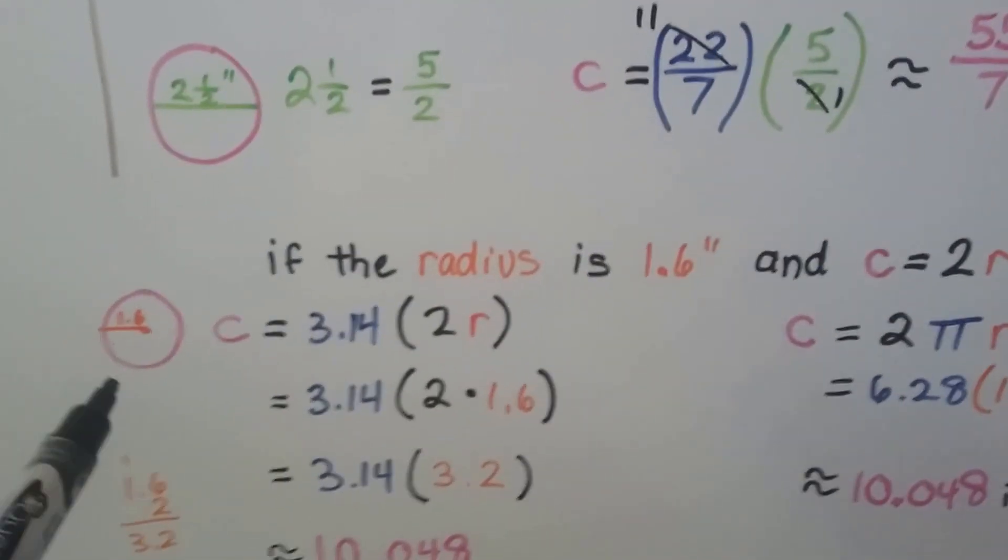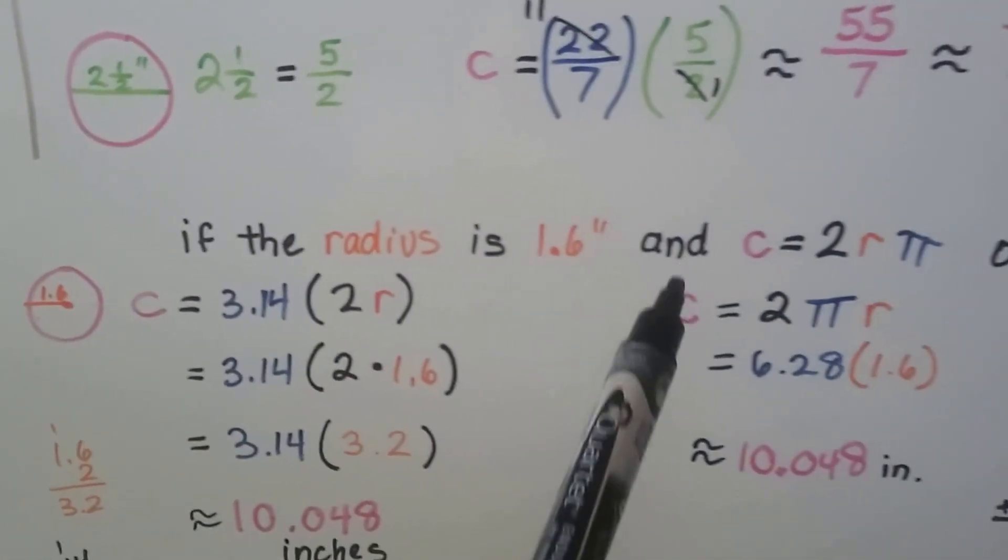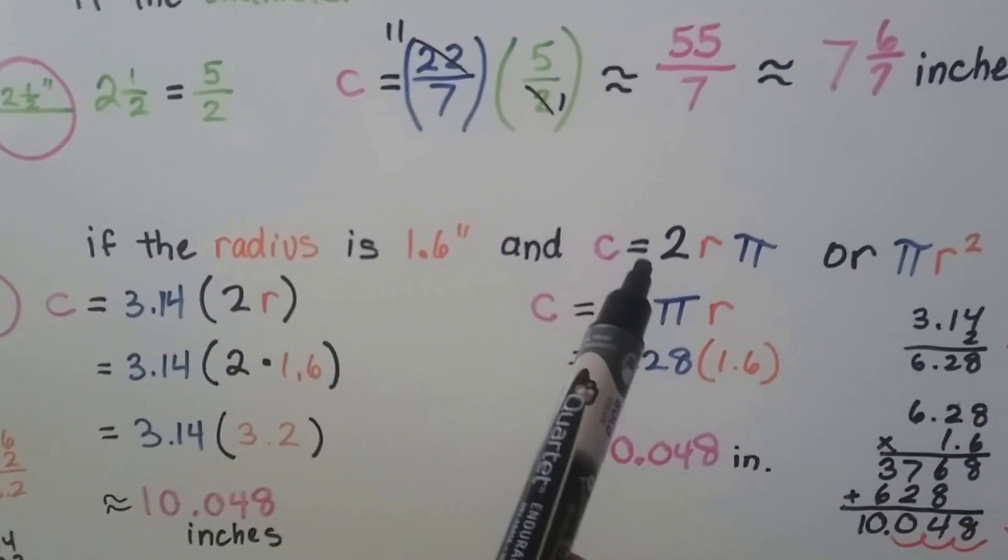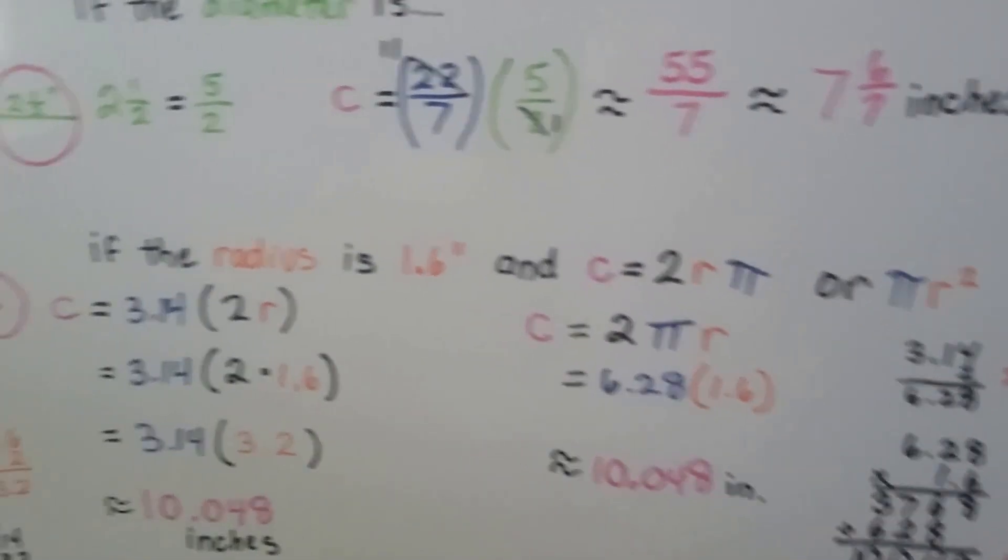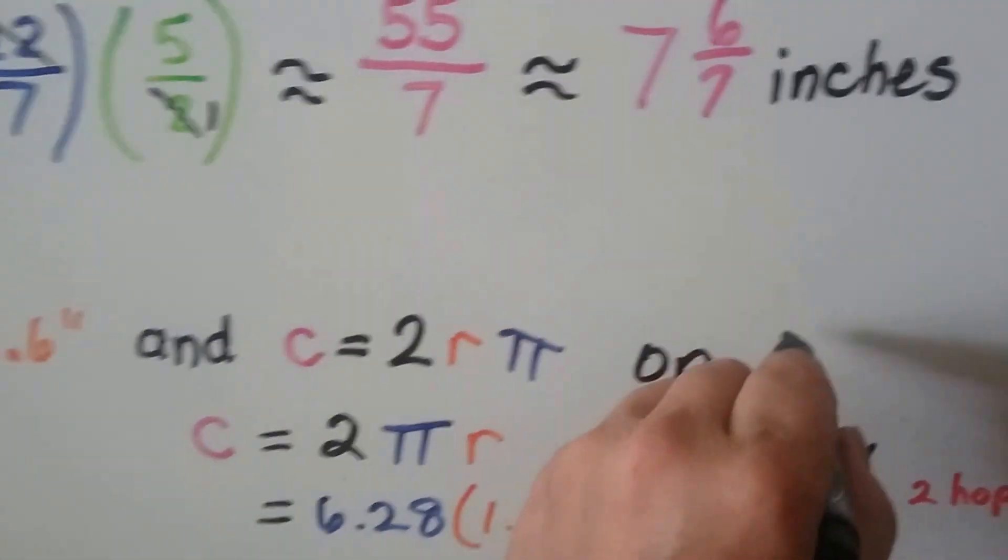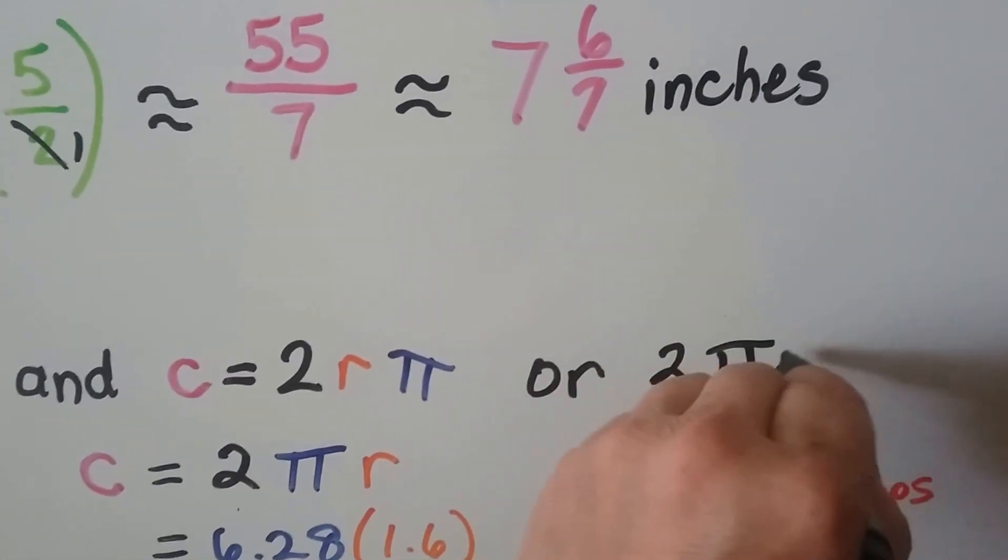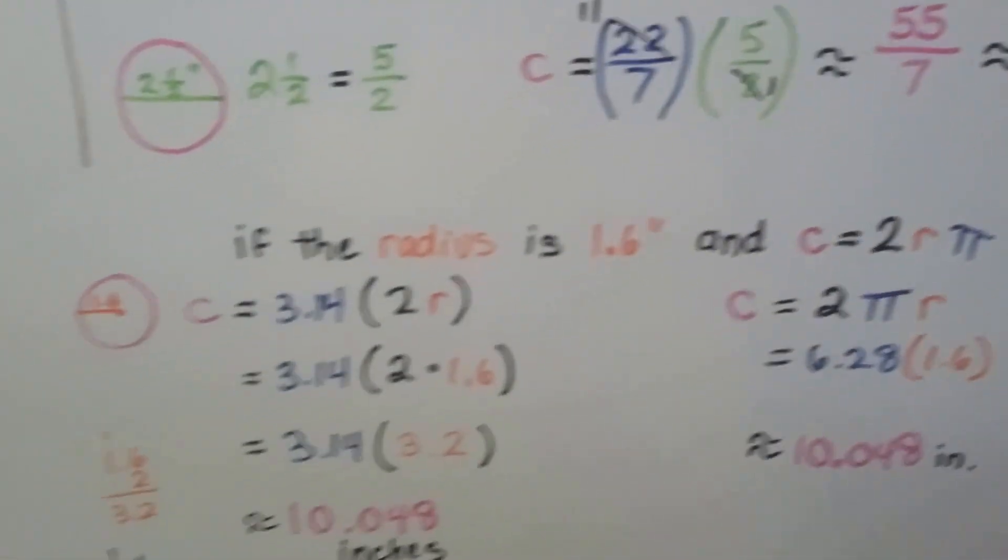And if the radius is 1.6 inches or centimeters or whatever, and the circumference is equal to 2r pi or 2, I needed to write 2 pi r.